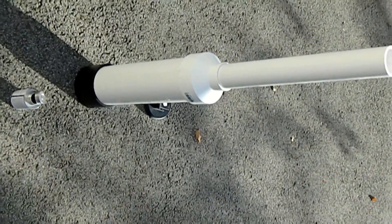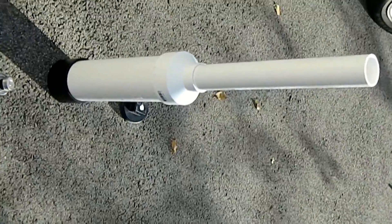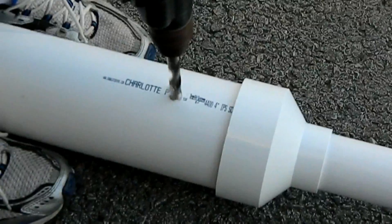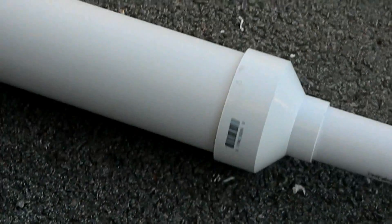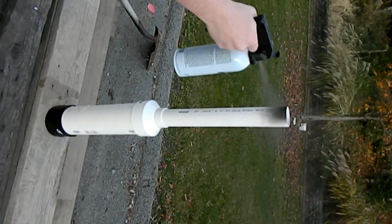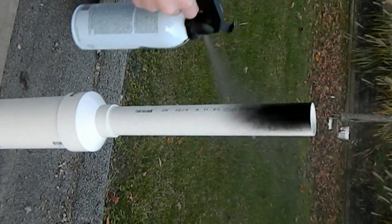The next step is to drill your hole for the grill lighter and to paint it any color you want. We chose black.